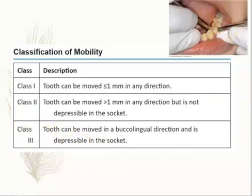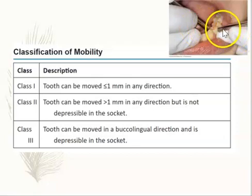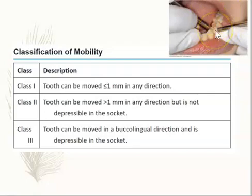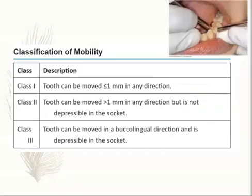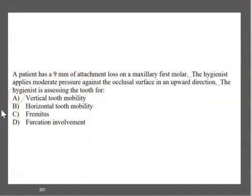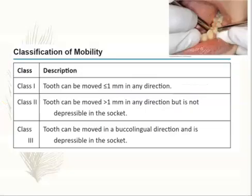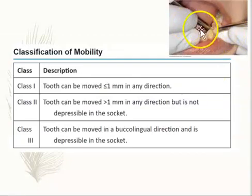So class three mobility means two things: it can be depressed into the socket, and it can be moved horizontally more than two millimeters. Going back to this question, if you apply pressure in an upward direction and the tooth goes up and down in the socket, that is vertical tooth mobility — so the answer is A. For comparison, horizontal tooth mobility is side to side; vertical is up and down.